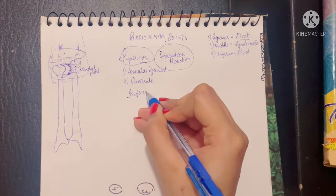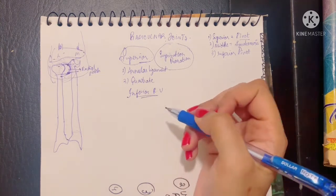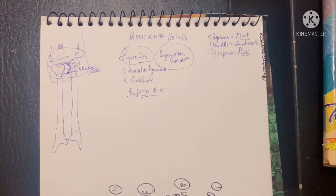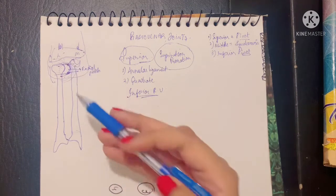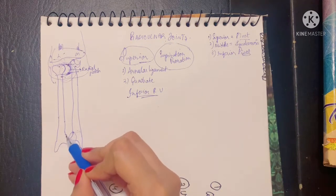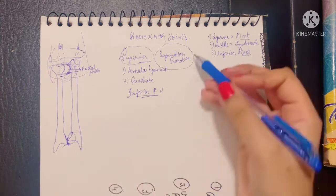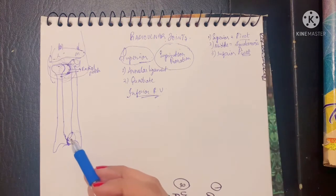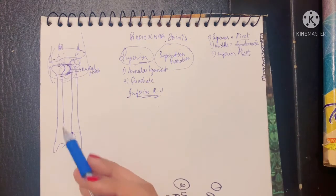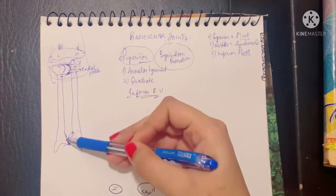The inferior radio ulnar joint is also a pivot synovial joint. Its articular surfaces are the opposite of the superior joint: here the head of ulna articulates with the ulnar notch of the radius bone — essentially vice versa from the top.